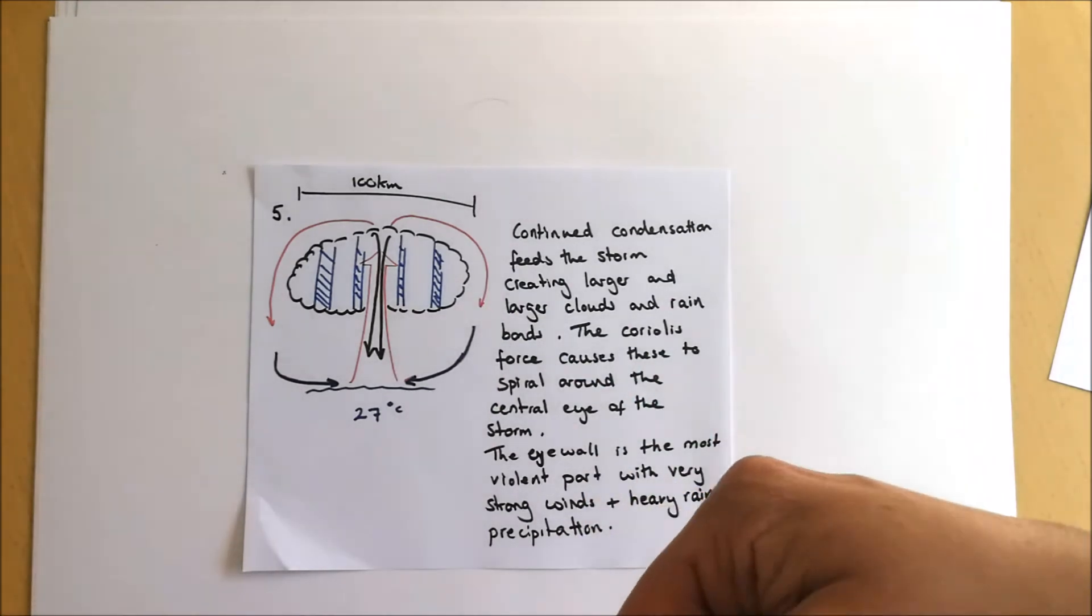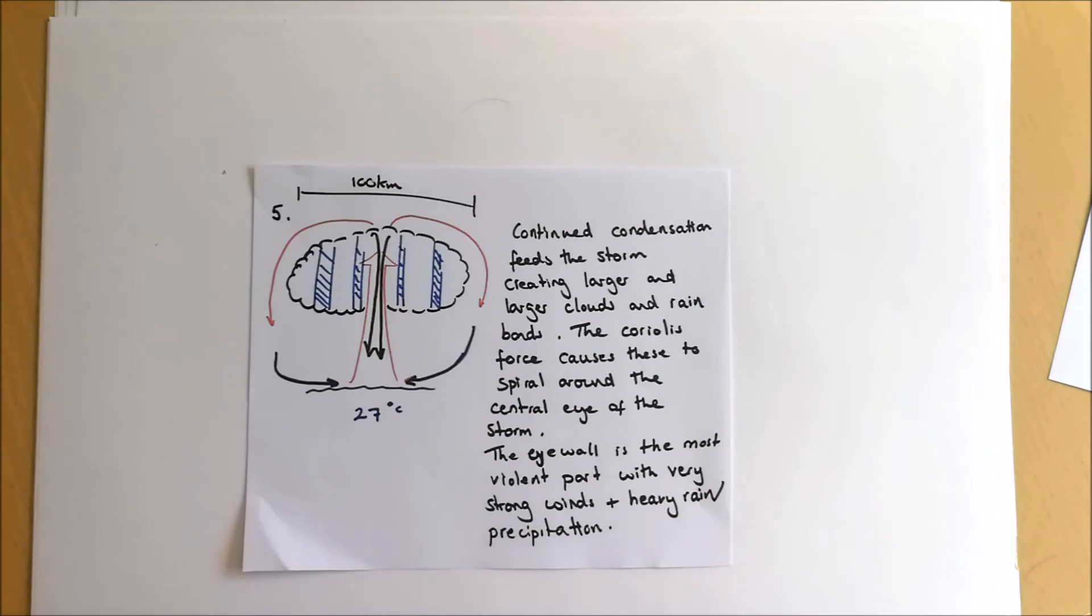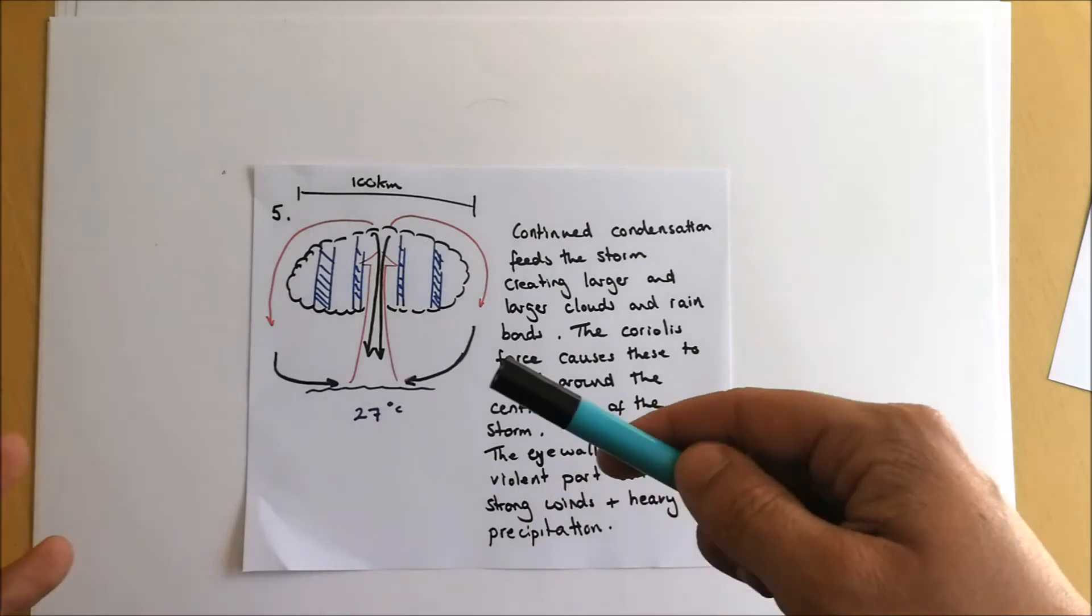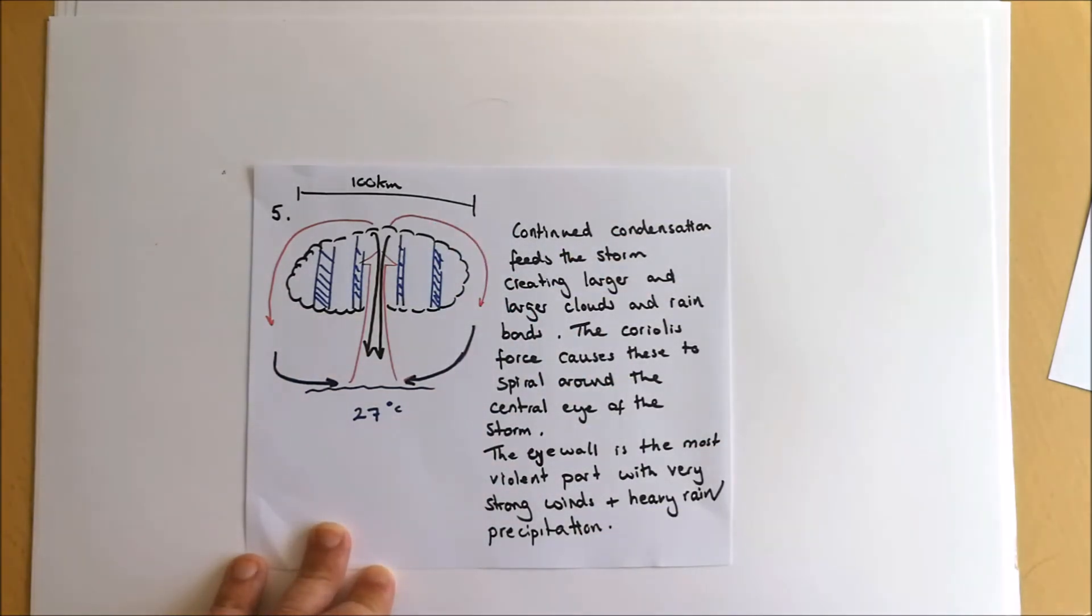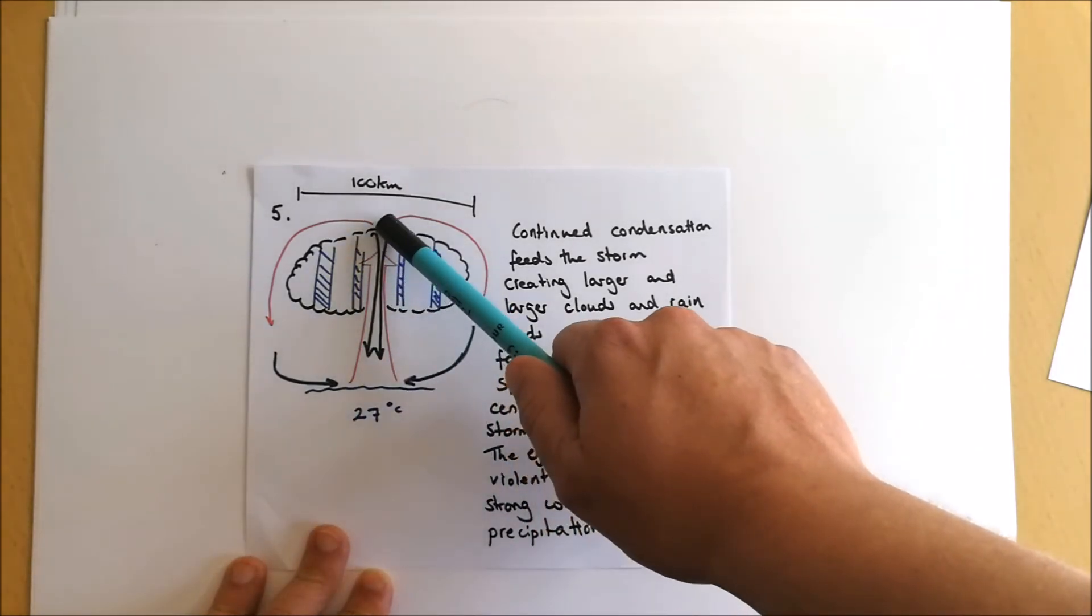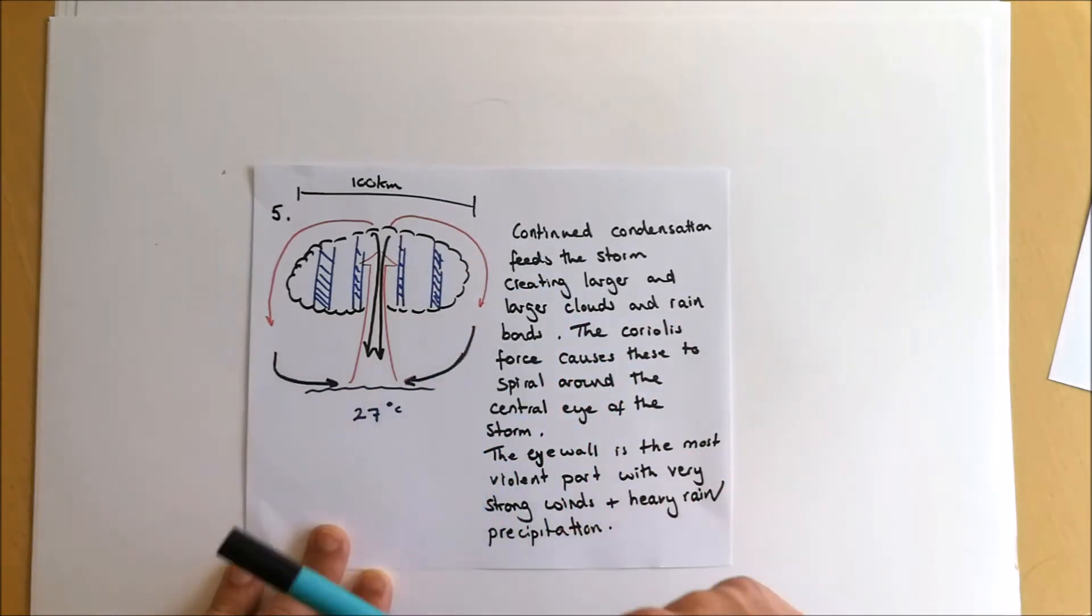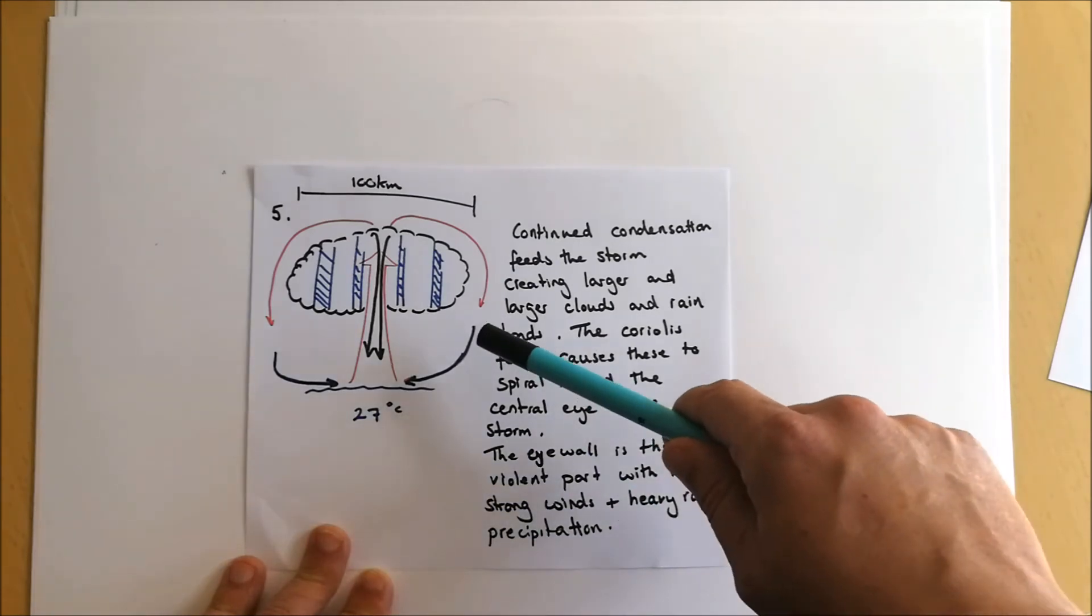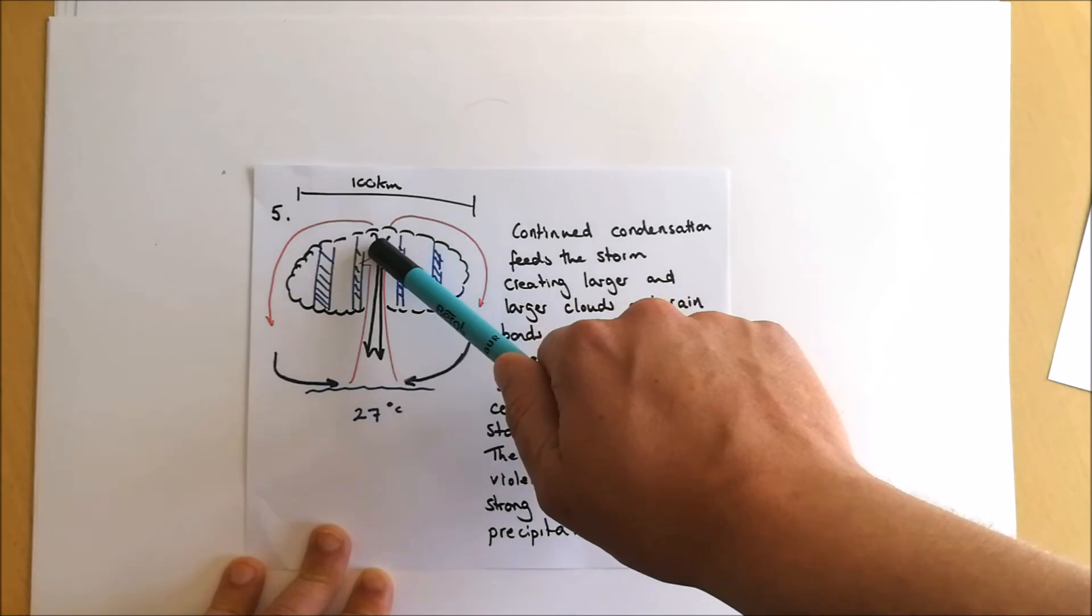Now what happens is over time that continued condensation creates larger and larger clouds. Hurricanes can stretch several hundred kilometers across. We get within these clouds large rain bands forming that spiral inwards towards the center of the hurricane, otherwise known as the hurricane eye. So we can see here with these bands of very heavy precipitation. Now what happens is when that warm air is rising up, some of it will escape at the top of the cloud formation and circle back around, cooling down, condensing, becoming denser and moving back towards the low pressure at the base of the storm, creating kind of like a feedback loop.